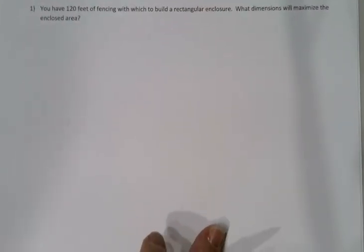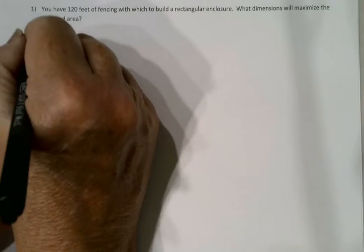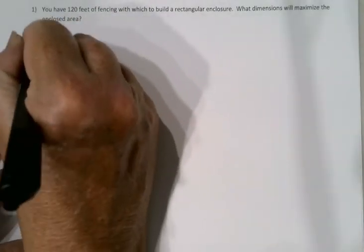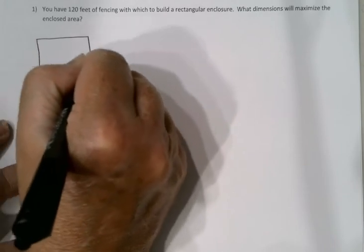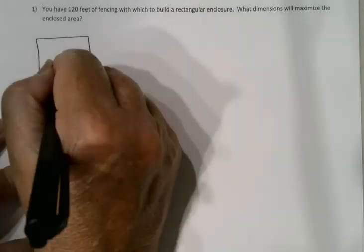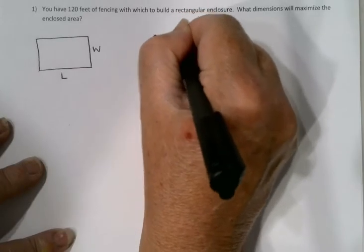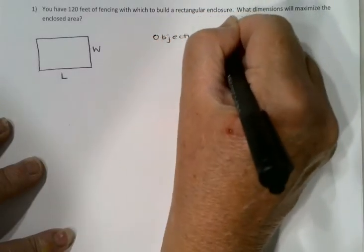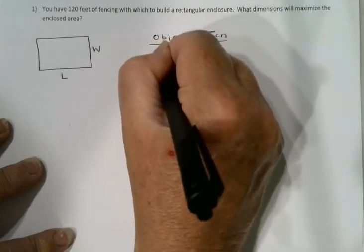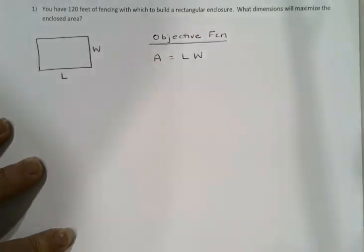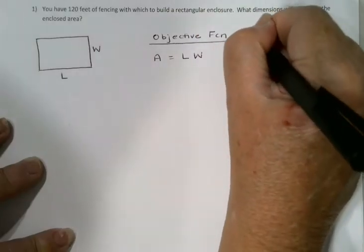Let's take a look. In Example 1, you have 120 feet of fencing with which to build a rectangular enclosure. What dimensions will maximize the enclosed area? I'll start by just diagramming this. We're trying to build a rectangular enclosure, and my goal is to maximize the area. I know the area would be the length multiplied by the width. So my objective function is area equals length times width, and my goal this time is to maximize that.